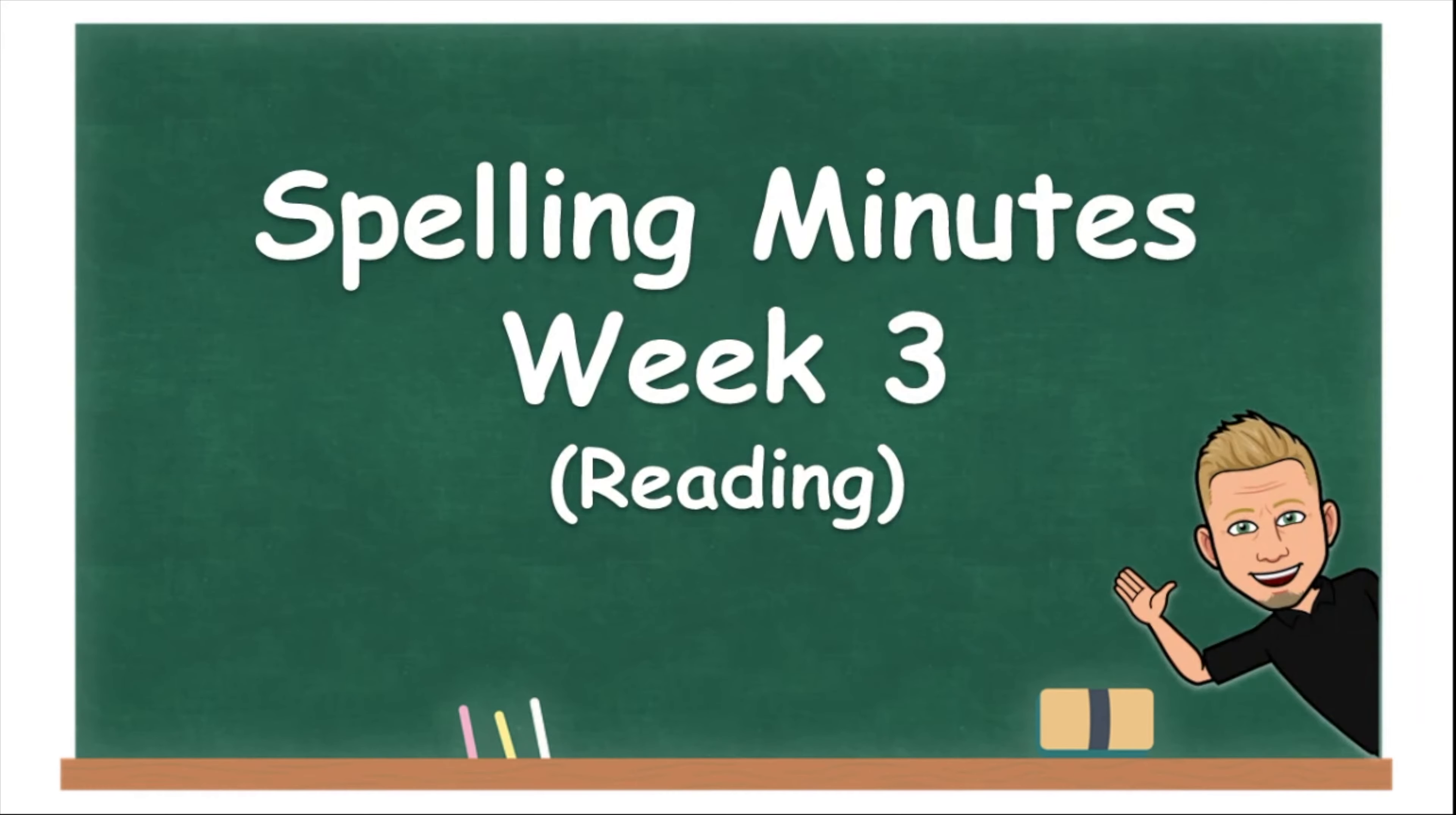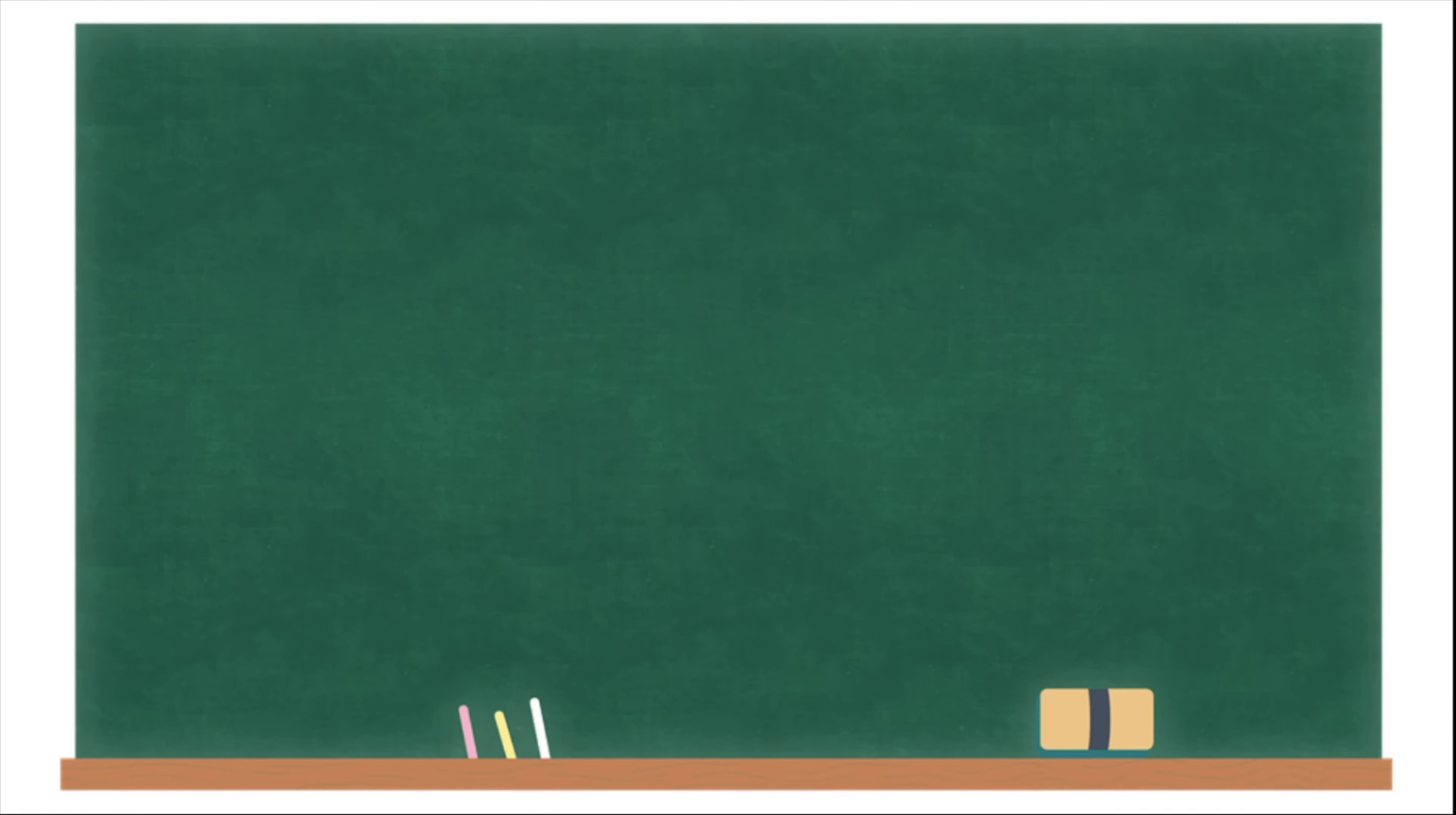Hey, everybody. Welcome back to Spelling Minutes. This is week three. I'm Michael Merritt and we are ready to get started. All right. This week, we're going to spell words in the an and at families. That is a-n and a-t. All right. Let's get started.